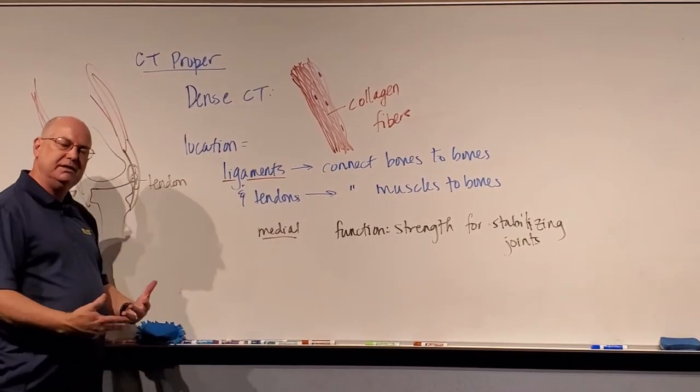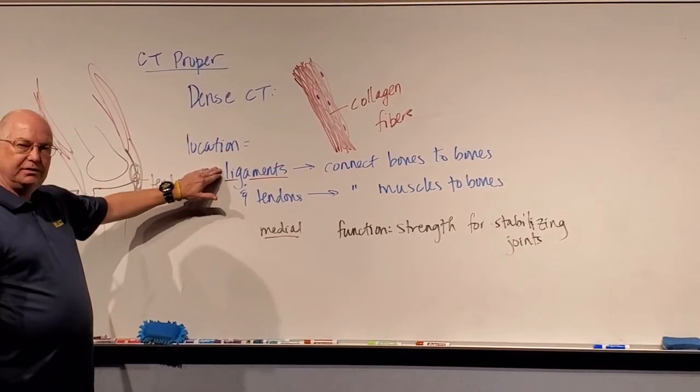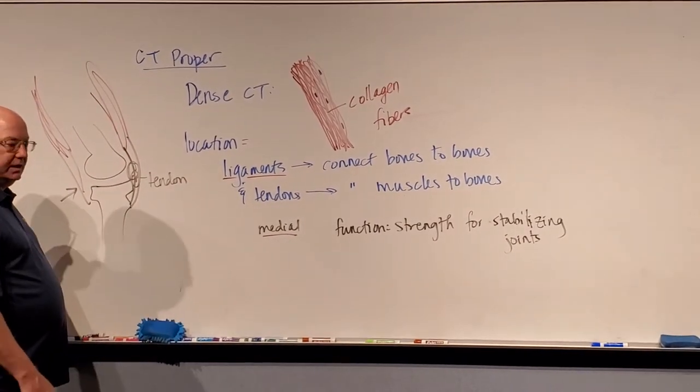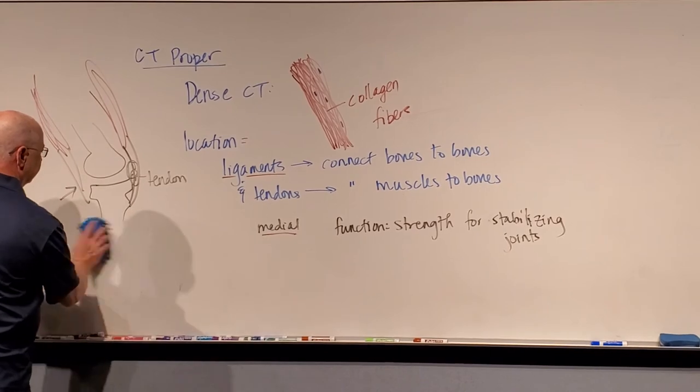So tendons connect muscles to bones. They do provide strength for stabilizing joints and they connect the muscle to the bone so that the bone can move. More stability with ligaments, more movement with tendons. That's where we find dense connective tissue: ligaments and tendons.